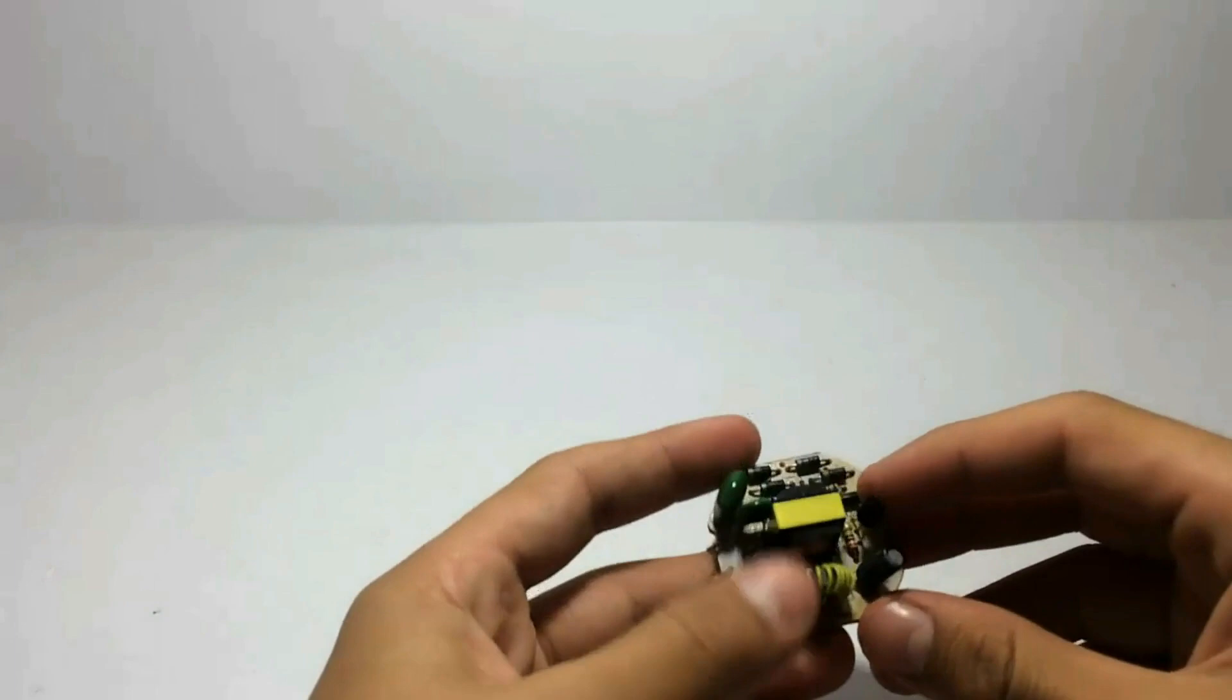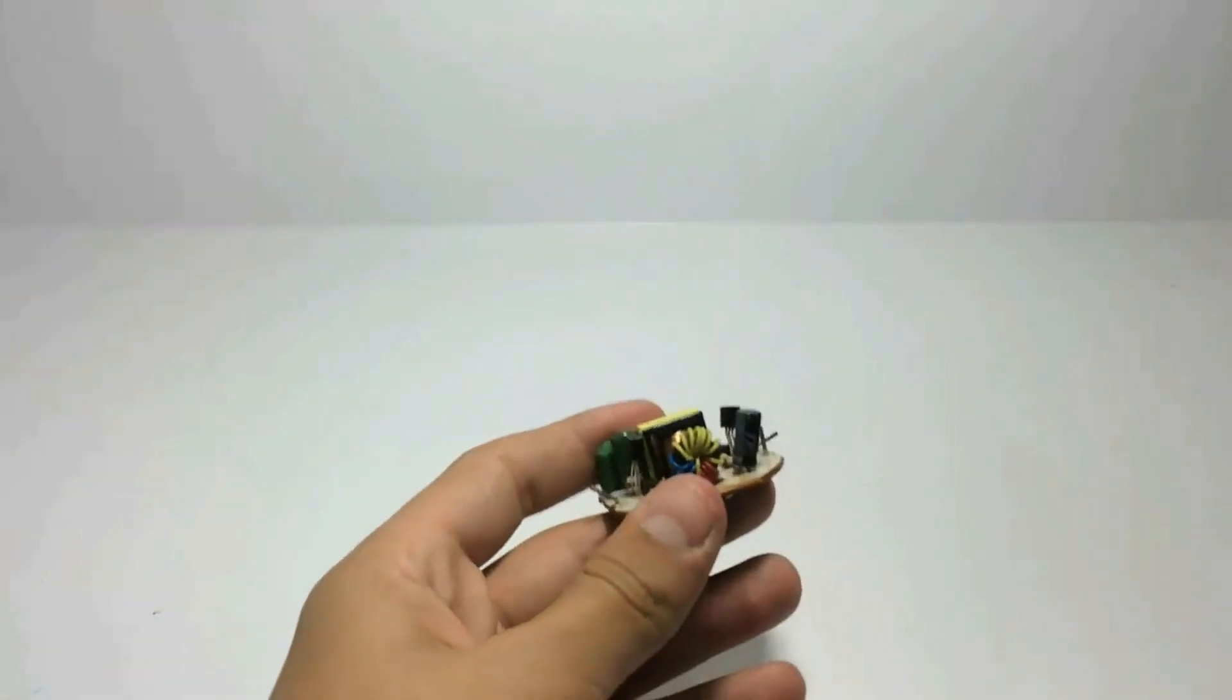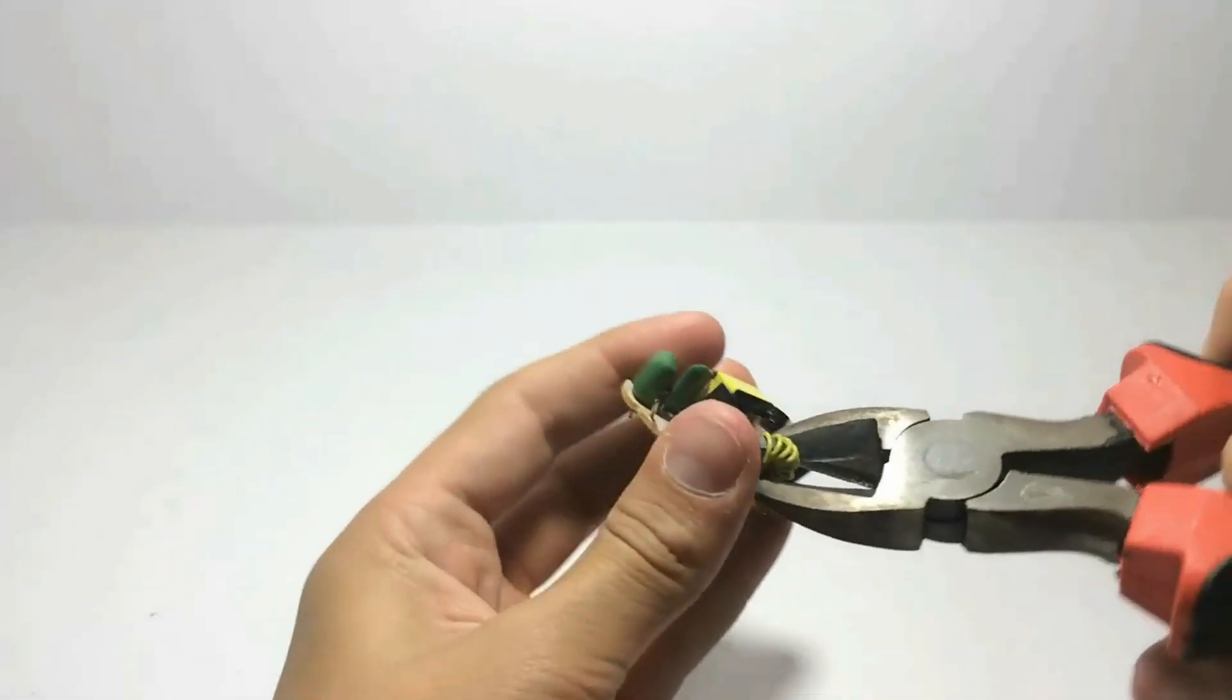And here it is. Usually there are four to seven wires with the ferrite core. You can cut them and get it out.